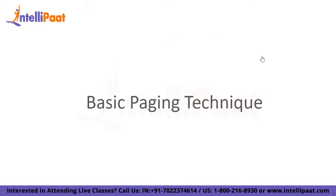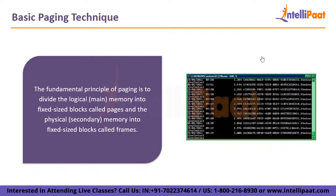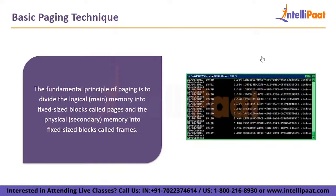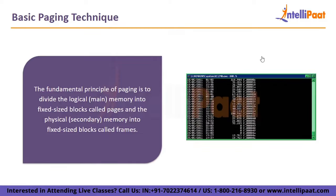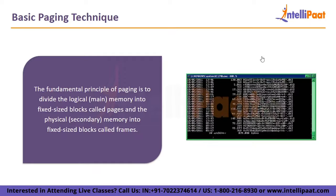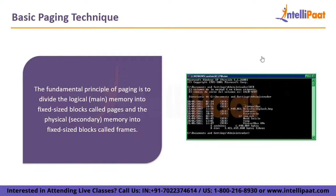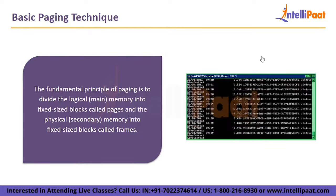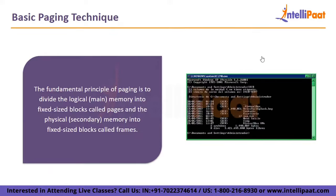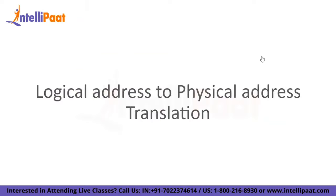The fundamental principle of paging is to divide logical memory — the main memory — into fixed-size blocks called pages, and physical or secondary memory into fixed-size blocks called frames. The goal is to execute pages that have been loaded into memory. Paging improves CPU utilization by loading processes from secondary memory to main memory. In secondary memory, pages might be spread across several separate locations, and the fundamental concept is to save those pages into main memory frames. Pages are loaded into frames usually when a process requires them.